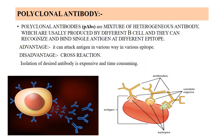Polyclonal antibodies are a mixture of heterogeneous antibodies which are usually produced by different types of B-cells that can recognize and bind a single antigen at different epitopes. If we inject an antigen into an animal, the animal body develops antibodies against it. These antibodies are produced by different types of B-cells and form a mixture. Different types of B-cells secrete different types of antibodies, and they recognize the same antigen.